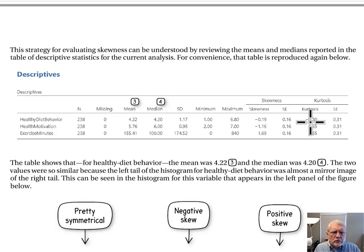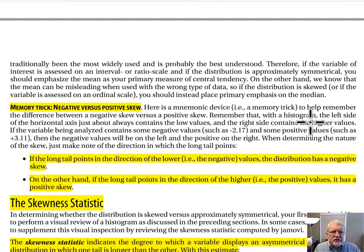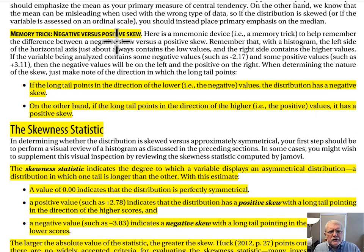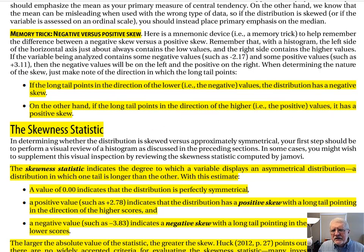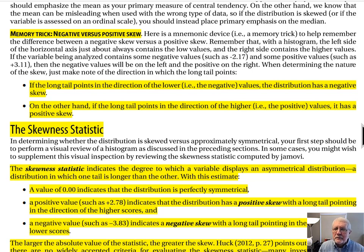More discussion of skew — Hatcher's memory trick for negative versus positive skew: if the long tail points in the direction of the lower, more negative values, your distribution has a negative skew. If the long tail points in the direction of the higher, more positive values, it has a positive skew. That is one tactic used to determine skew by eyeballing figures, but there is a quantitative tactic as well — the skewness statistic.